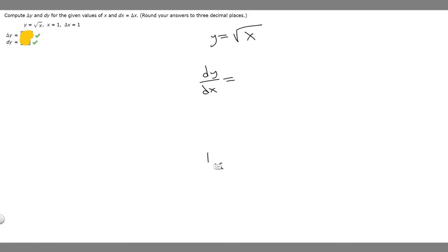And then we can just rewrite this as 1 over 2 rad x. It's just an easier way to see it. So 1 over 2 rad x. And then what we want to do is, since we're solving for dy, we want to get dy by itself. So we can multiply both sides by dx.